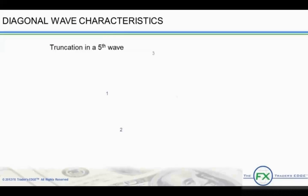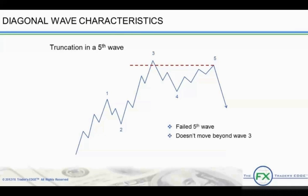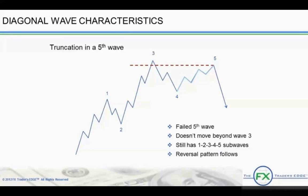In addition to a diagonal fifth wave, the fifth wave may end in what is called a truncated wave 5, otherwise known as a failed fifth wave. This means that wave 5 fails to move beyond wave 3. The fifth wave still has the necessary 1, 2, 3, 4, 5 subwaves within a 5, 3, 5, 3, 5 internal structure and the rules still apply. However, it is a short wave and usually signals a reversal pattern or a change in direction. In classical technical analysis, a truncated fifth is a double top formation.